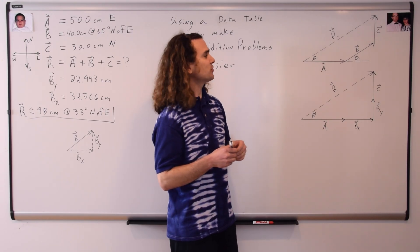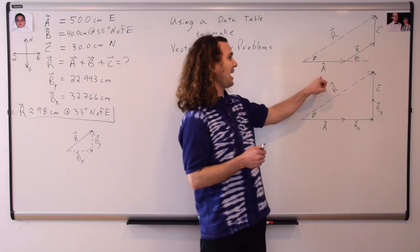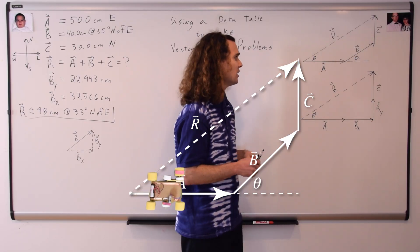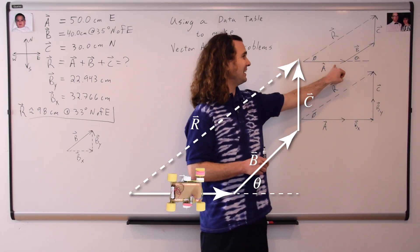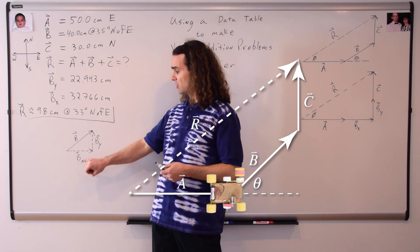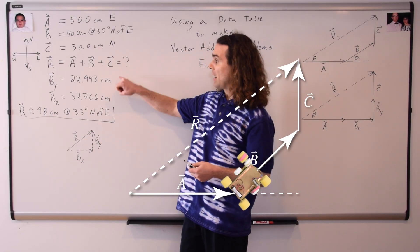Last time we did a vector addition problem where we added the displacement vectors a, b, and c together to figure out our resultant vector r. Vector b was neither directly in the x direction nor directly in the y direction, so we needed to break vector b into its components in the x and y direction.